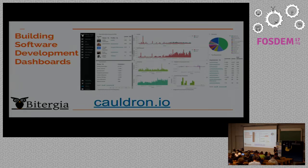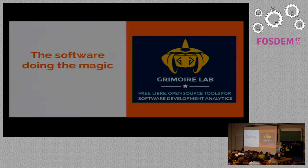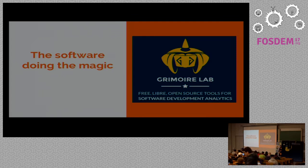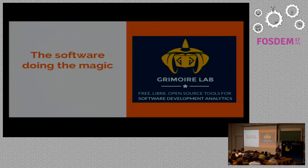The software doing the magic is Grimoire Lab. We have a long history of using Python for looking up information from software repositories. We started with Metrics Grimoire about 10 years ago — a set of tools for retrieving information from repositories and storing it in SQL databases. We used that technology for research for many years. But when we started the company, we decided it was time to learn from the past and restructure everything from scratch. We decided to rewrite everything using only Python and to make it as structured as possible, with a pluggable architecture supporting new kinds of repositories and dashboards easily.